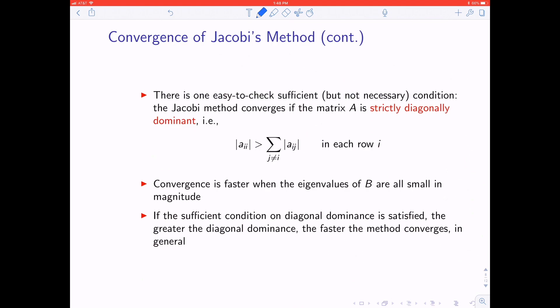There's a sufficient condition that's even easier to check for Jacobi method to converge, and that's if the matrix A is strictly diagonally dominant. What strictly diagonally dominant means is that you look at each row of the matrix and you look at the entry that's on the diagonal. If it's larger in absolute value than the sums of the absolute values of all the other entries in the row, that's strictly diagonally dominant. So that's an easy to check and sufficient condition.